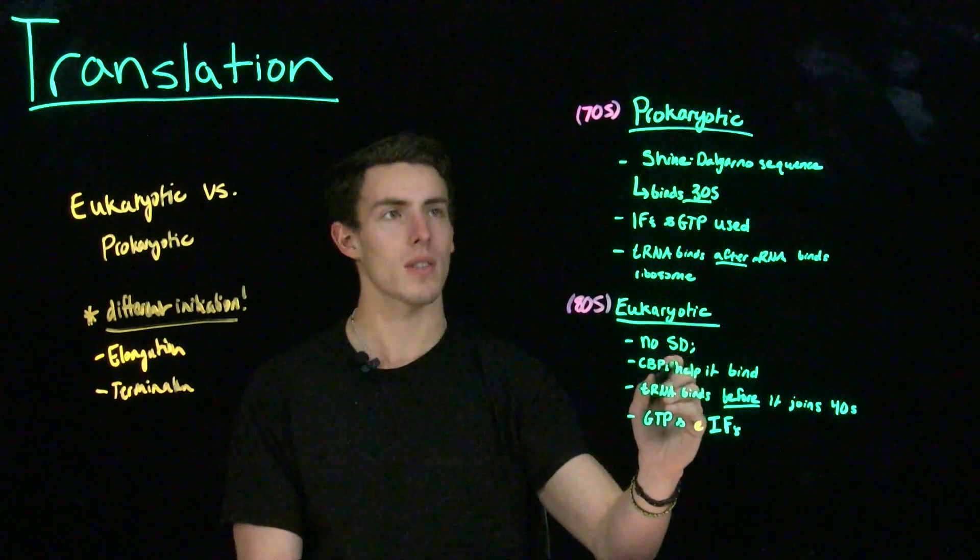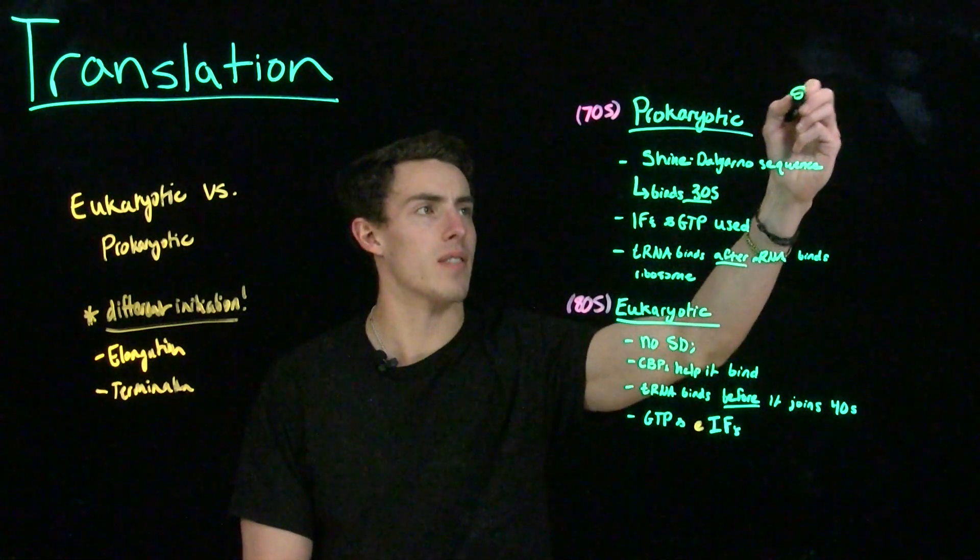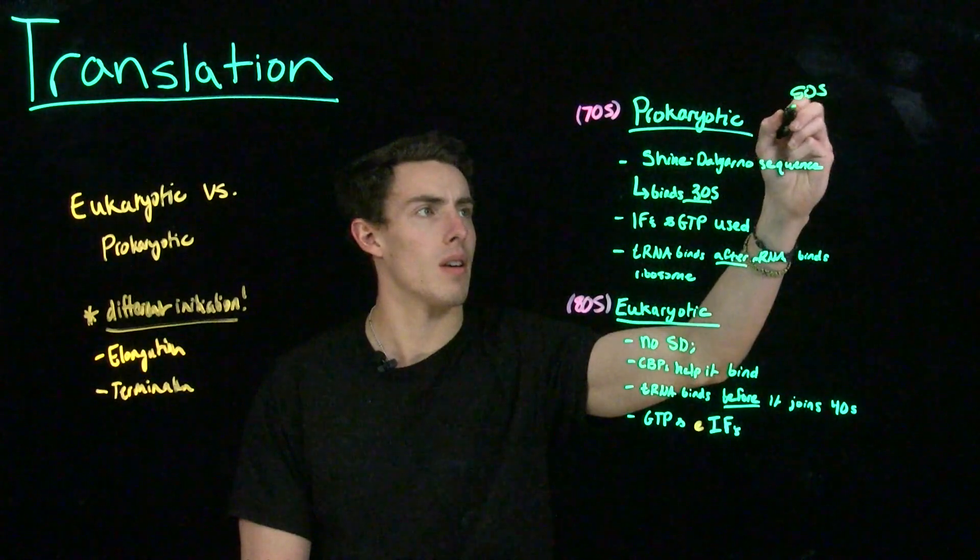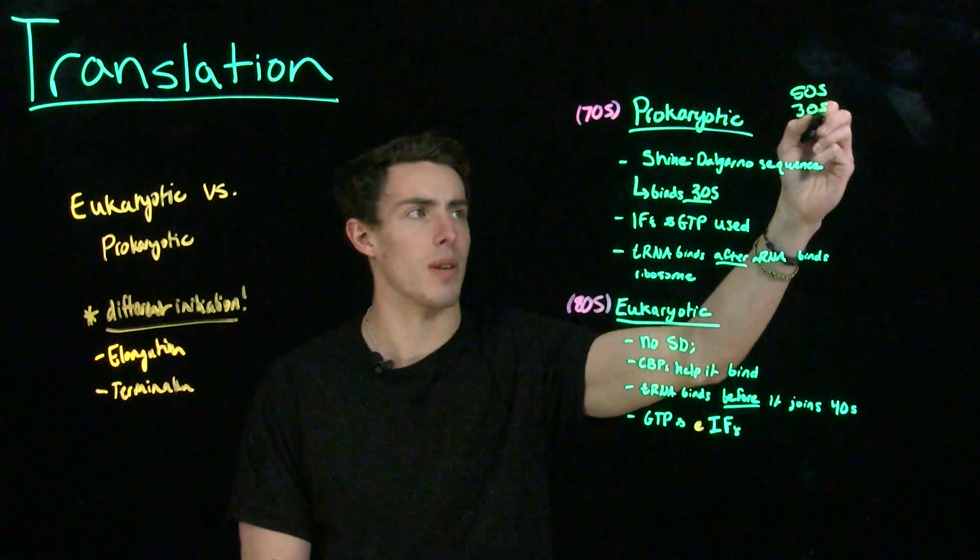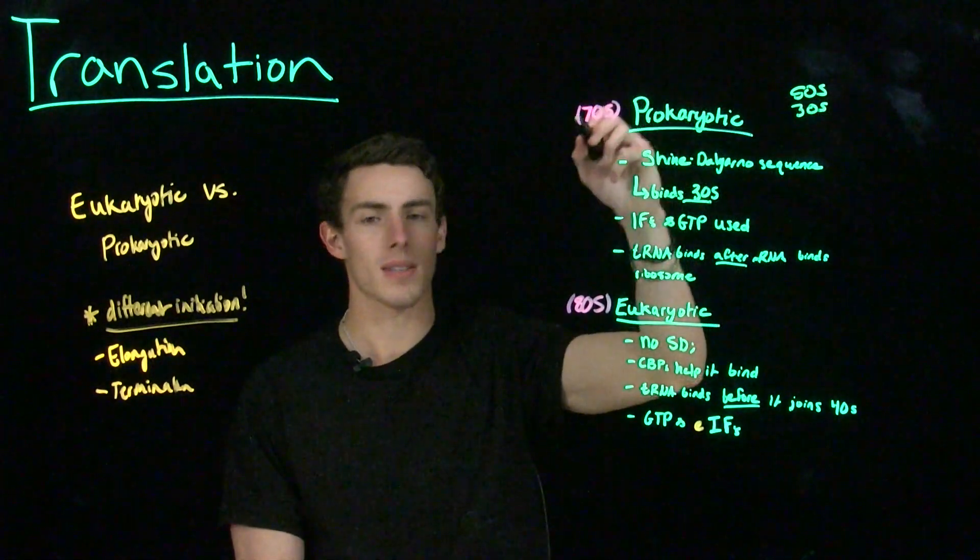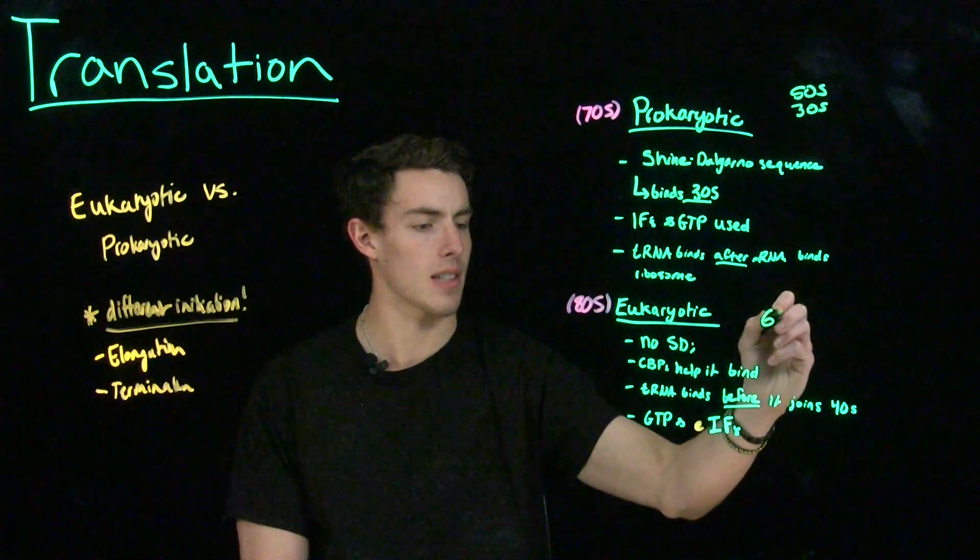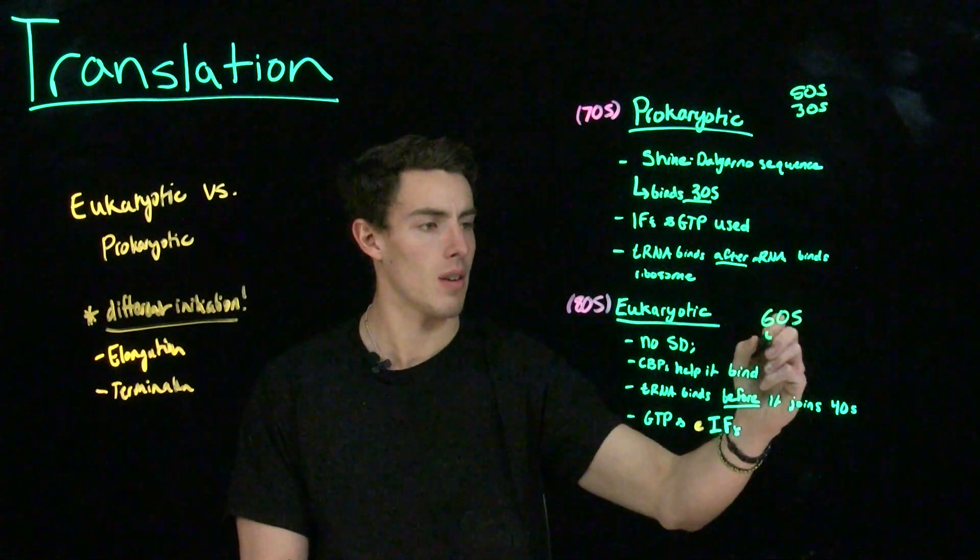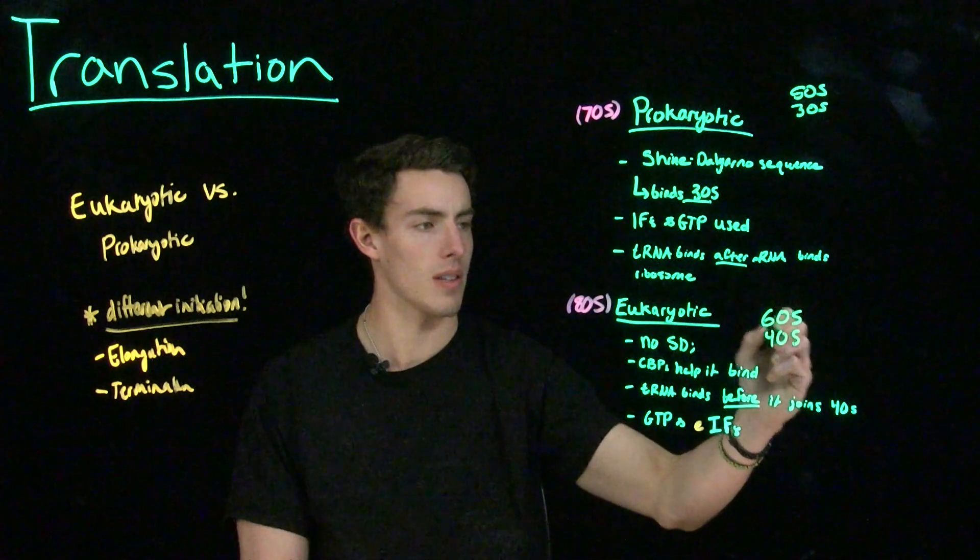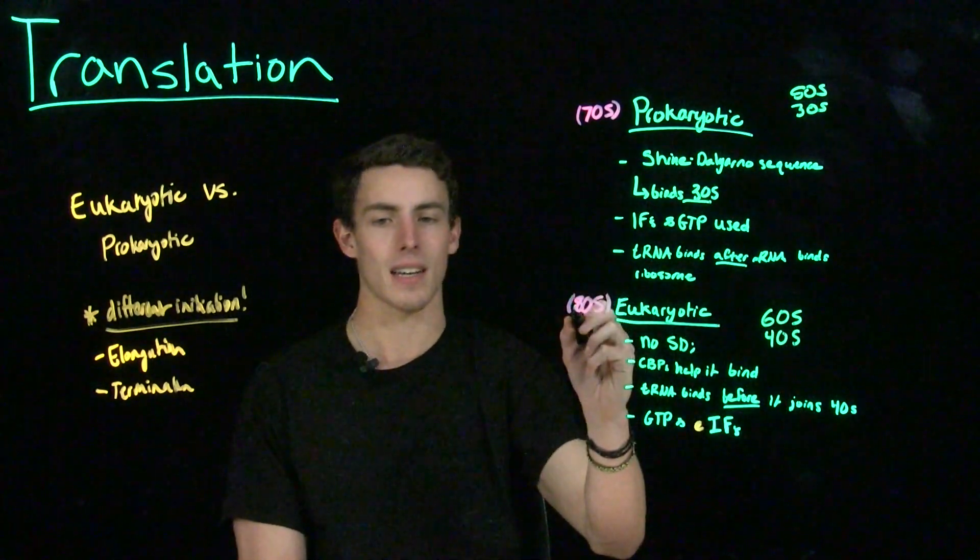Another couple of small differences is that in prokaryotic cells, we have the 50S and 30S subunits of the ribosome. The 50S being the large and the 30S being the small, which make up the 70S ribosome. And in eukaryotic cells, we have the 60S and the 40S subunits, the 60S being the large and the 40S being the small subunits that make up the 80S ribosome.